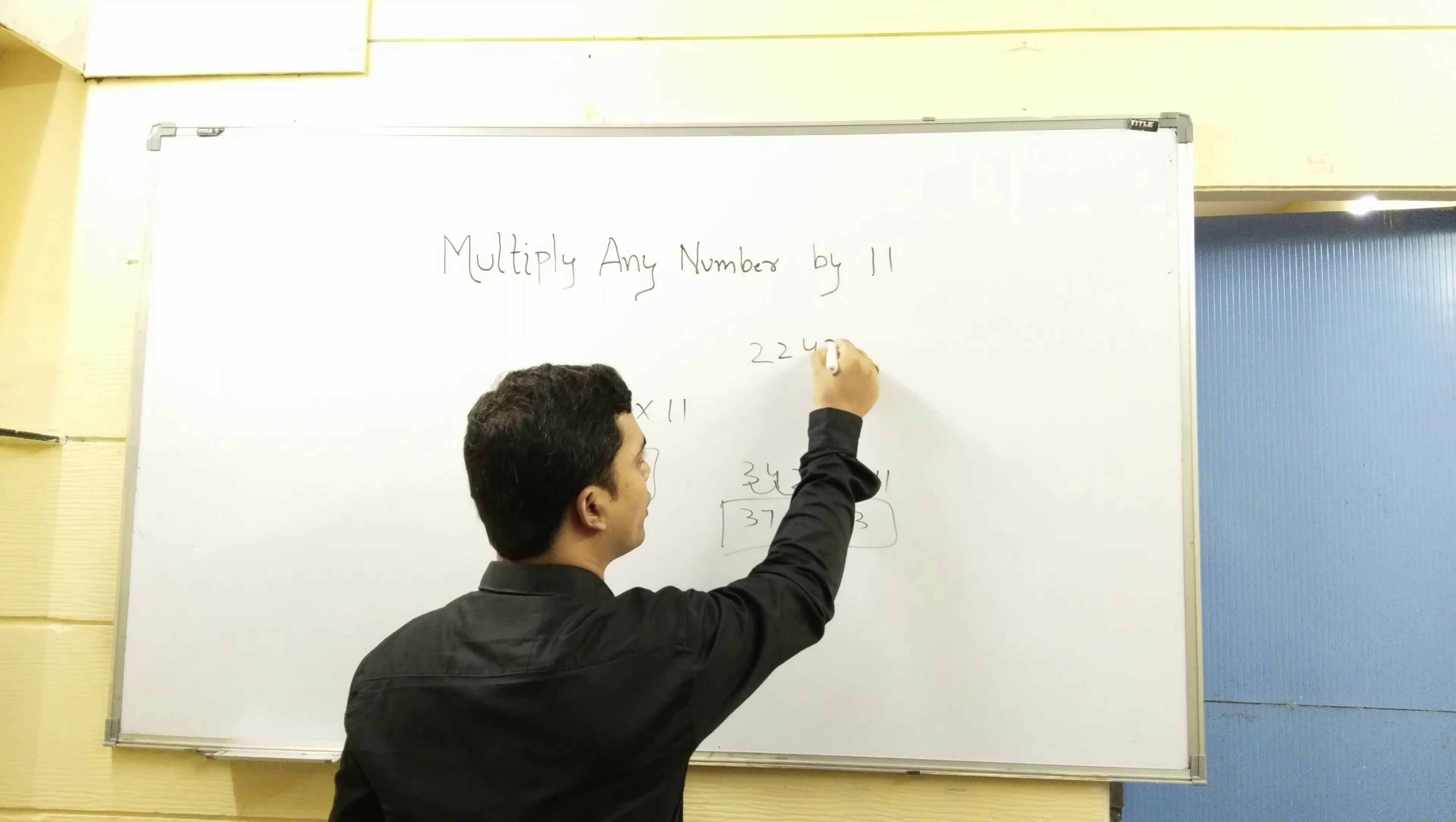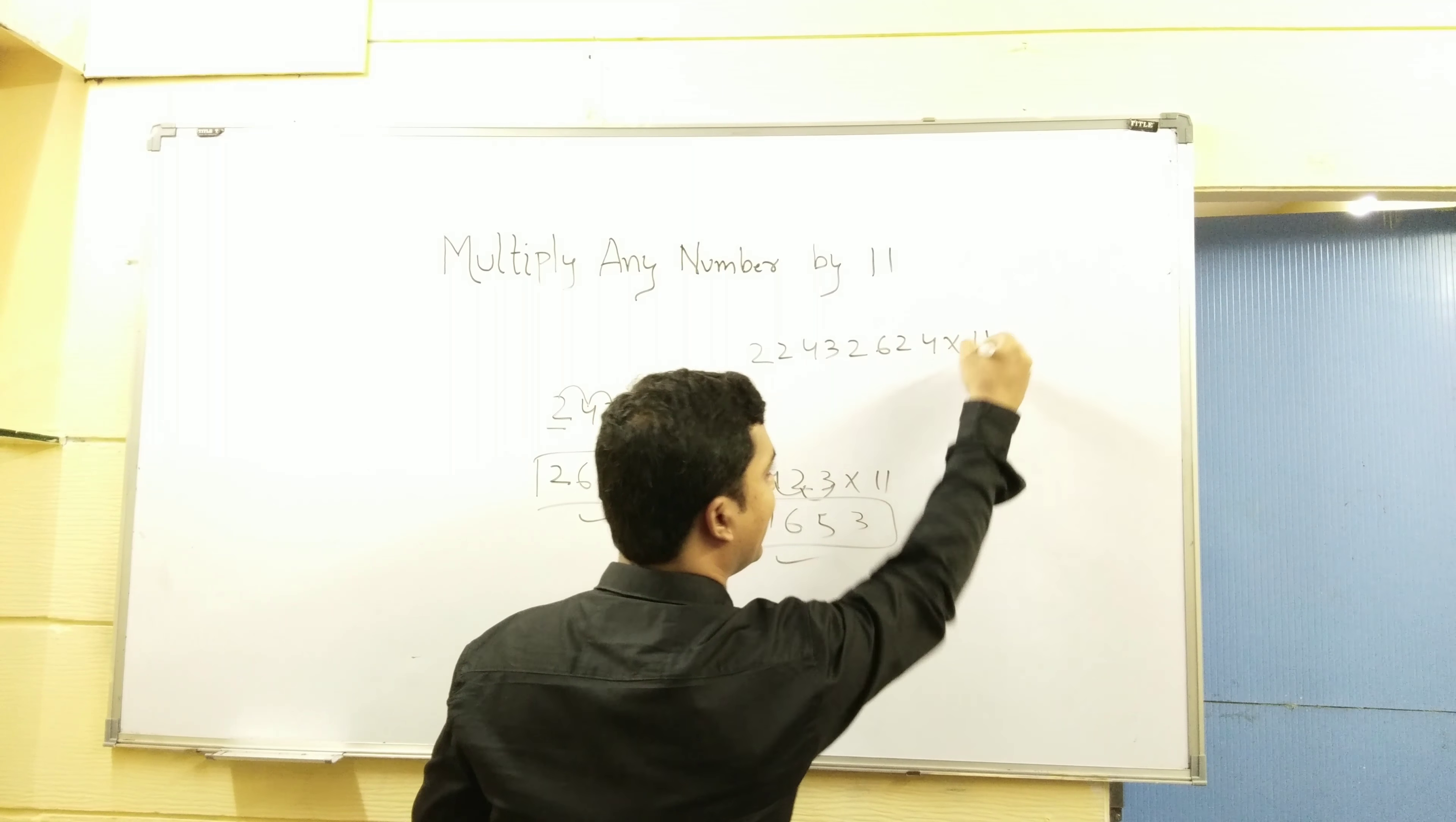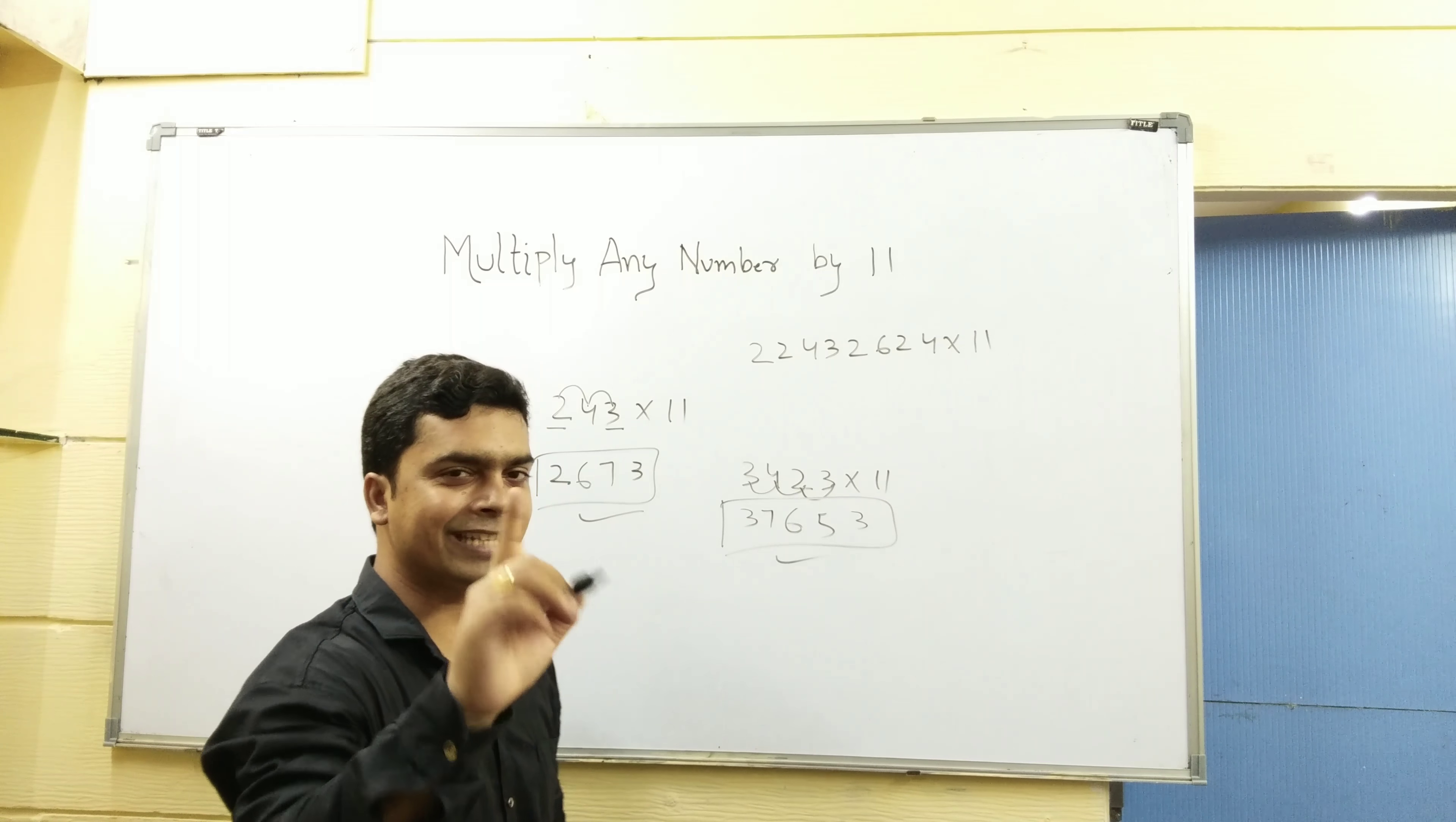243264. 2, 4, multiply by 11. What is the same trick? Same trick.